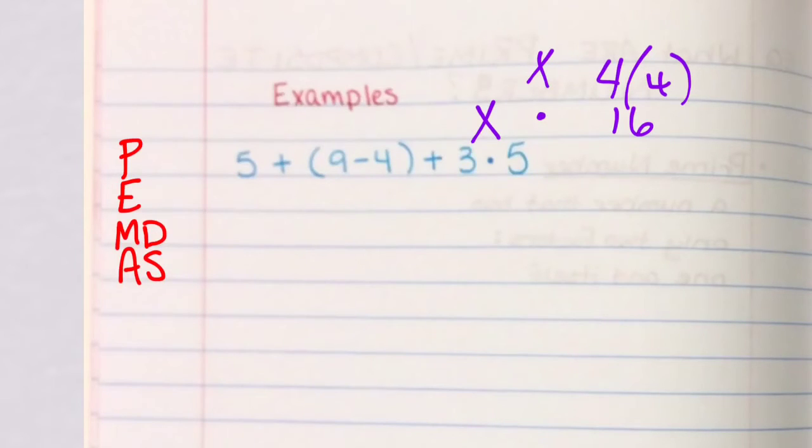If you see, sometimes we'll get it where we have a variable like 4X, that also means you're going to multiply 4 times that variable. So we're going to see a lot of changes to our multiplication symbols now that we're getting older and more scholarly.